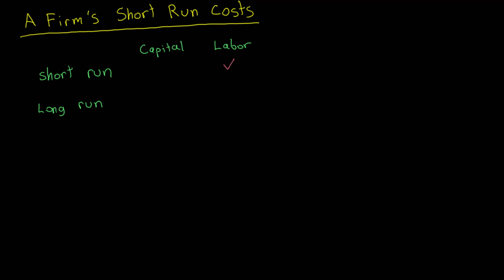In the long run, both capital and labor are variable. This is just something to keep in mind in the background, and what I discuss in this video can be generalized to production models with more than two types of inputs.